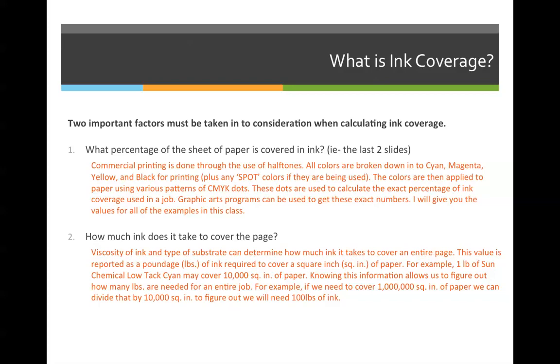And then secondly, how much ink does it take to cover the page? This quantity of ink and the type of substrate can determine how much ink it takes to cover an entire page. This value is reported as a poundage of ink per square inch to cover a square inch of paper. For example, one pound of Sun Chemical, that's a company that makes ink, low tax cyan may cover 10,000 square inches of paper. If you know this information, and that will be given to you by the ink company, knowing this information allows us to figure out how many pounds are needed for the entire job. So for example, if we need to cover one million square inches of paper based on the size of whatever we're printing and the ink coverage, we can divide that by 10,000 square inches because every one pound of ink will cover 10,000 square inches. And we can figure out that we need to purchase 100 pounds of ink. But don't worry about that for now, we're going to go through that in the next video.